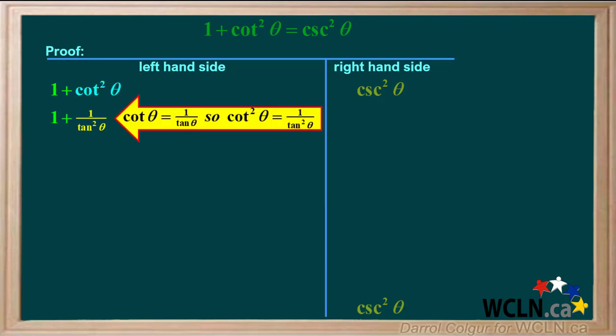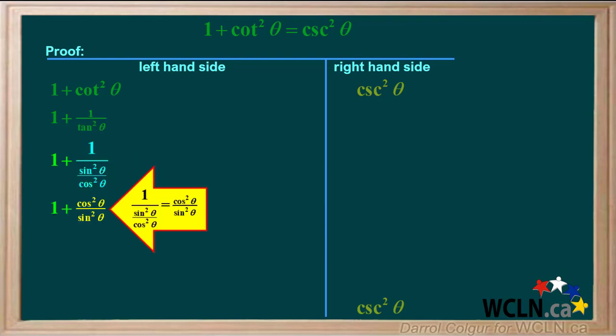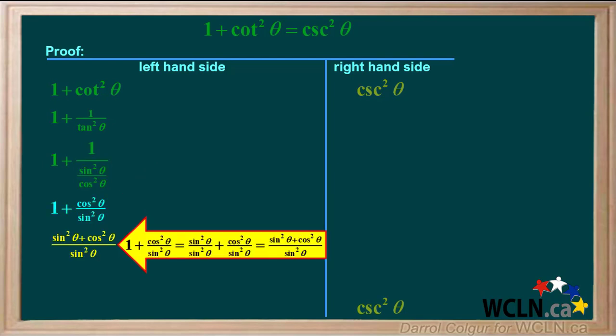Cotangent theta equals 1 over tangent theta, so squaring both sides, we get cotangent squared theta equals 1 over tangent squared theta. Tangent theta equals sin theta over cos theta. Dividing by sin squared theta over cos squared theta is the same as multiplying by cos squared theta over sin squared theta. 1 is the same as sin squared theta over sin squared theta, and adding these two terms gives us sin squared theta plus cos squared theta, all over sin squared theta.